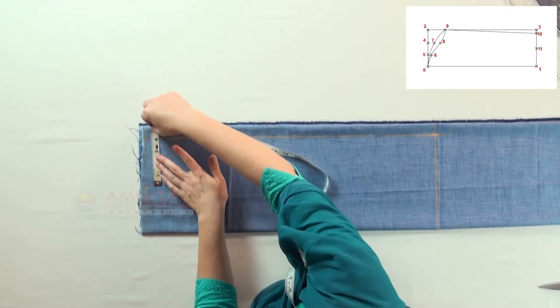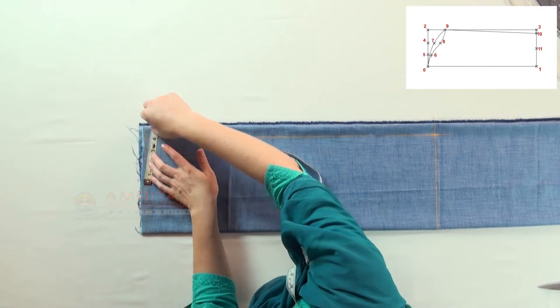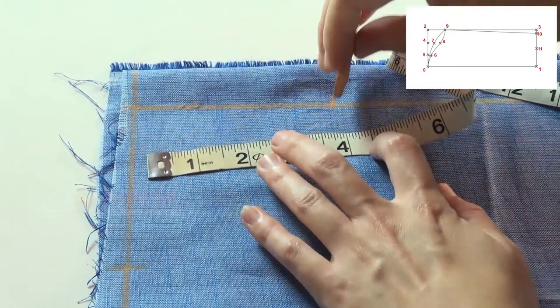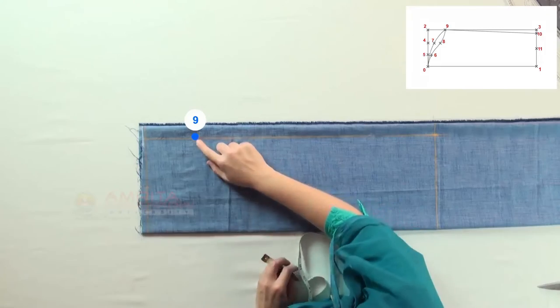Now measure the length between points four and two. Then starting from point two towards point three, measure the same length of four two and make a mark. This is point nine.